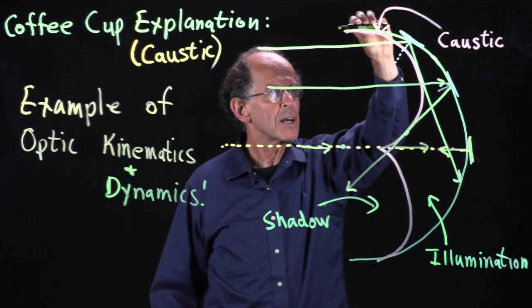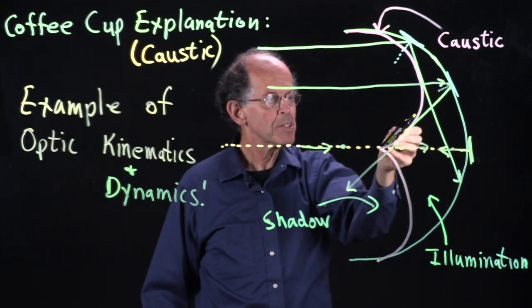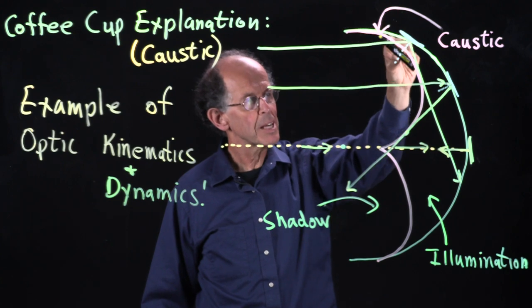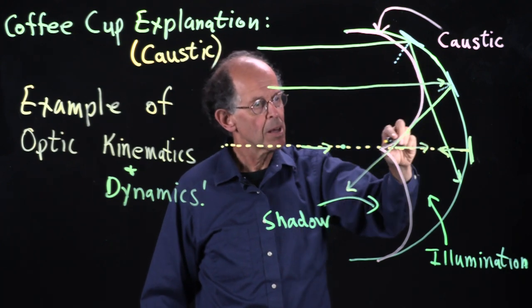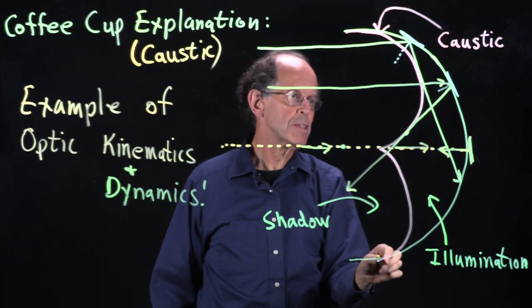So that conjunction of all the tangents, which is called the envelope, gives me the pattern of the caustic.